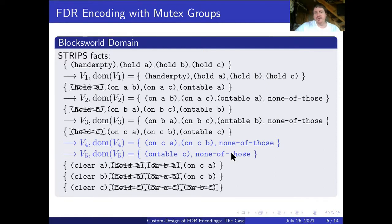All of these possible encodings are semantically equivalent in a sense that they all have the same set of plans and the same set of reachable states, although they are differently encoded.